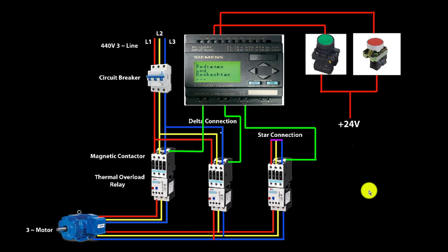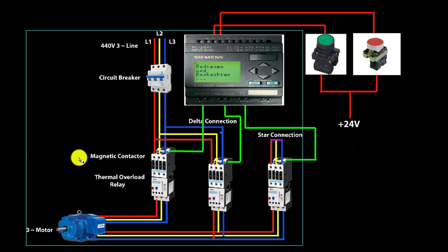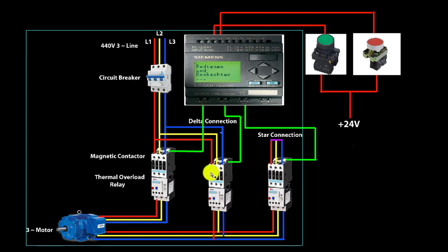So we have a simple setup for this simulation. We have a three-phase motor, which has a circuit breaker, which is magnetic, and the main magnetic contactor is working on it. We also have a star connection and a delta connection. So we have a three-phase motor with star-delta conversion.